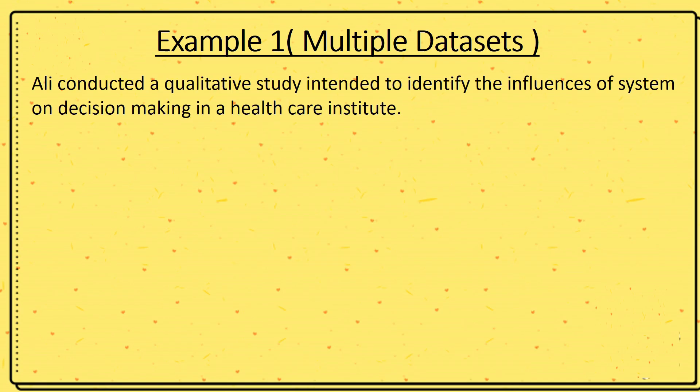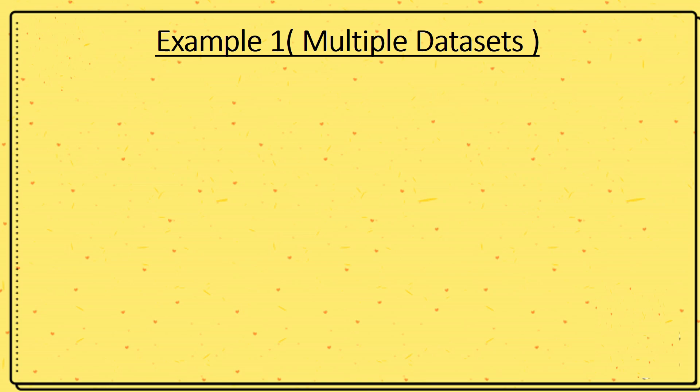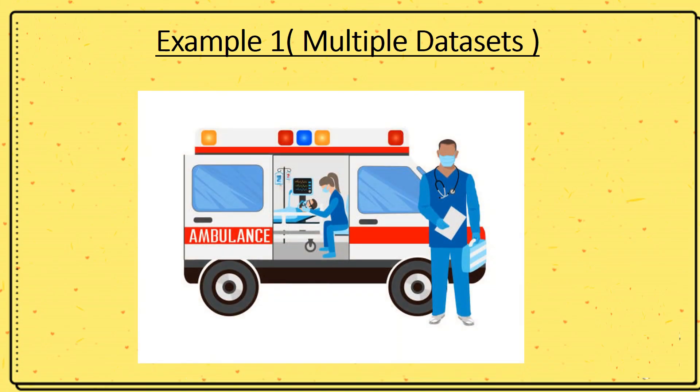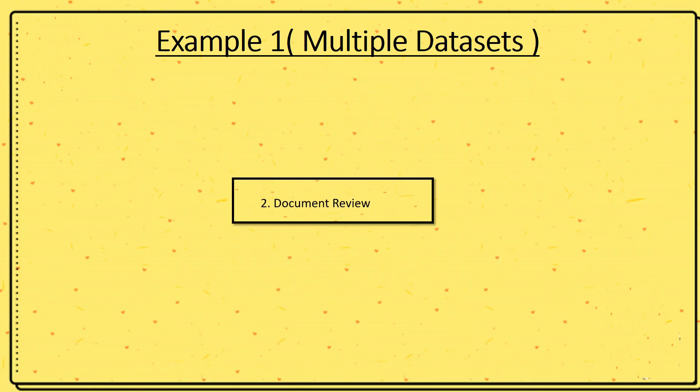Example number one: multiple data sets. For example, Ali conducted a qualitative study intended to identify the influences of system on decision making in a healthcare institute. He collected data from various participants. For example, the first group of participants were ambulance service staff. In the next phase, they collected data through document review.